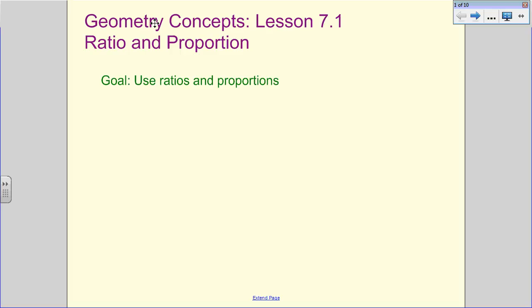All right, ladies and gentlemen, we're going to do a little jumping around here and we're going to take a look at Lesson 7.1. We're going to study Chapter 7 here. Chapter 7 has to deal with what are called similar figures and similar triangles. And so what we want to do is kick it off by looking at ratios and proportions. This is going to be part of what we use in studying similar figures.